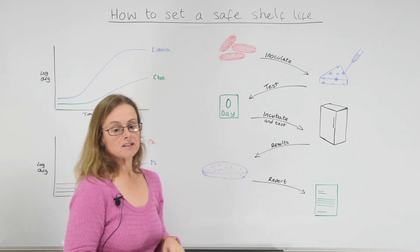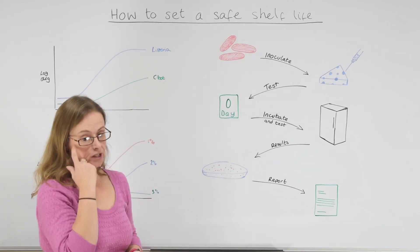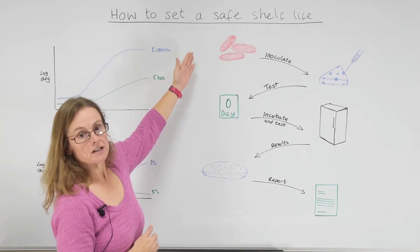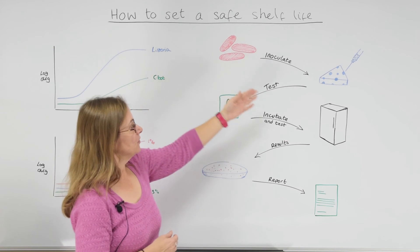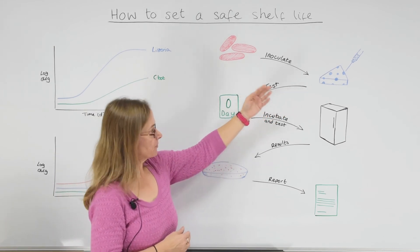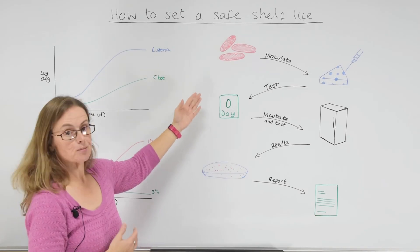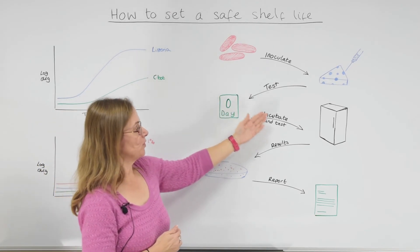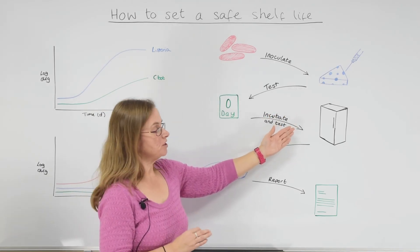This is where you actually deliberately inoculate the food with your test organism. So if we take listeria for example, we would grow up the bacteria usually overnight. It involves inoculating small amounts into the food and then we test that on day zero so that we know what level is present. Then we would inoculate enough samples and store them and incubate them at the relevant test conditions.